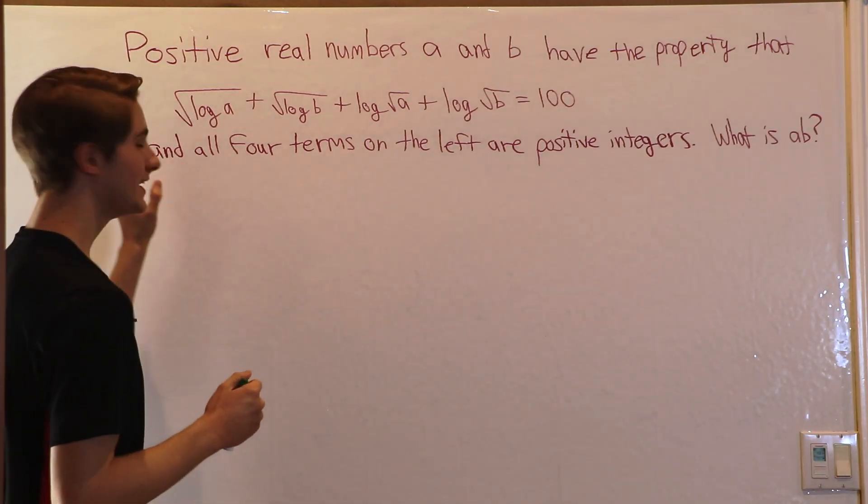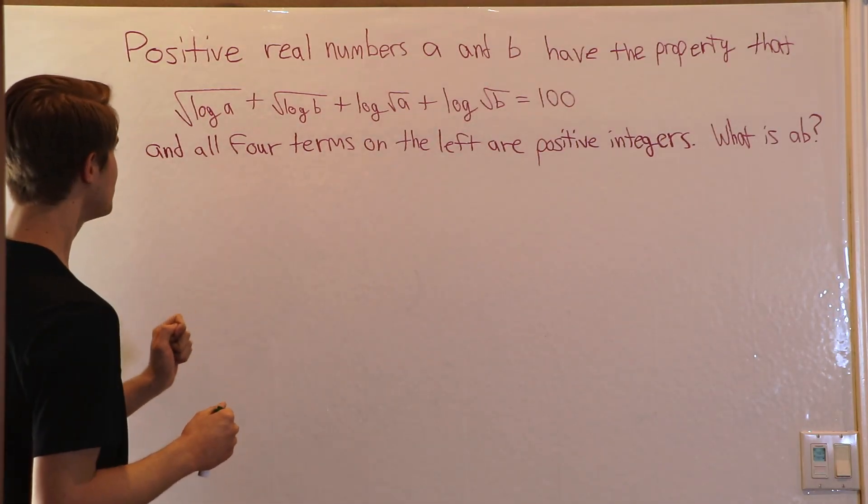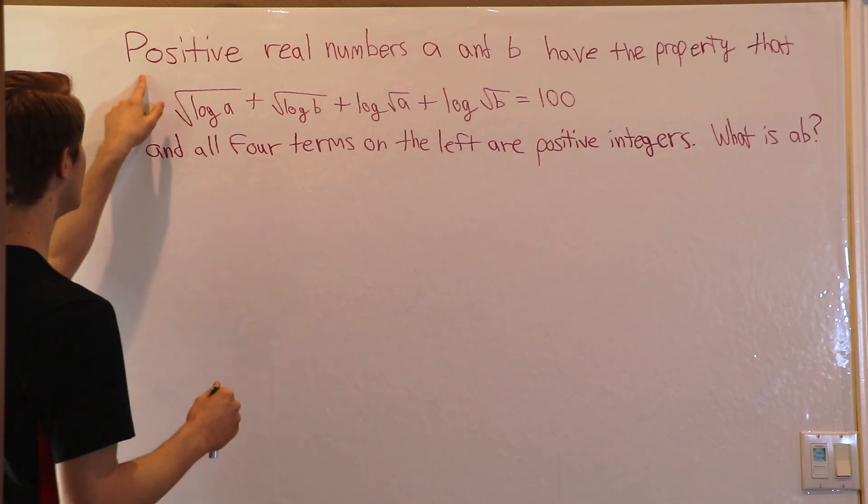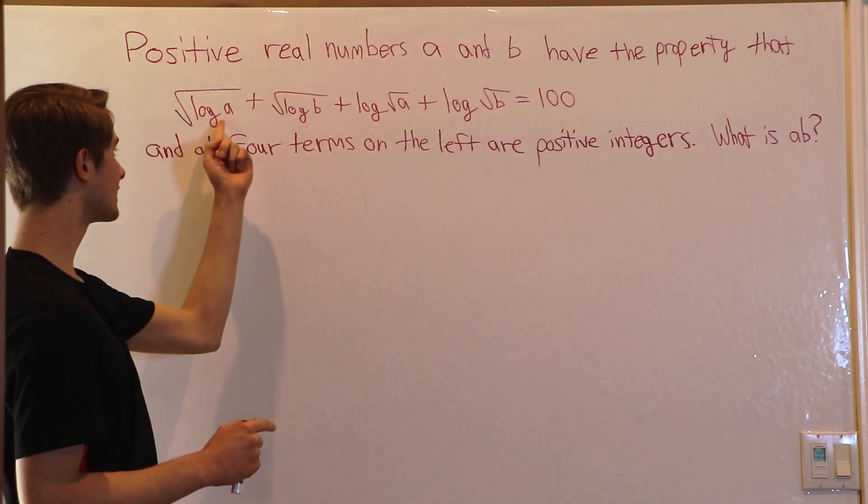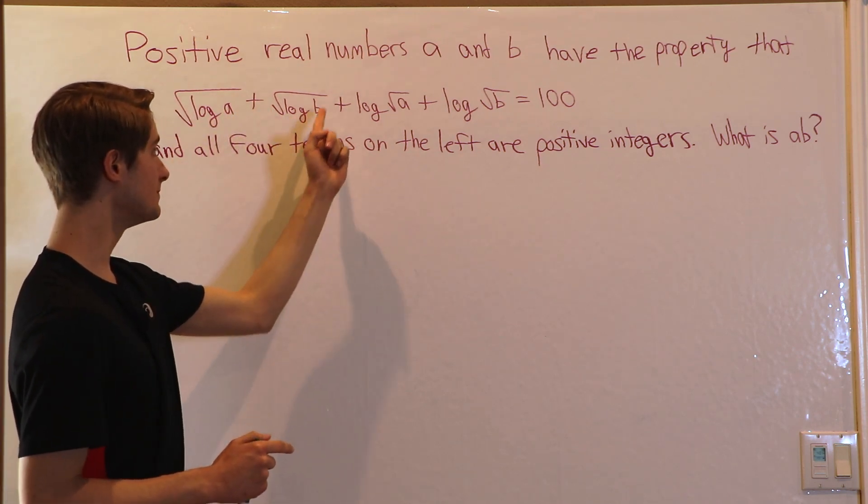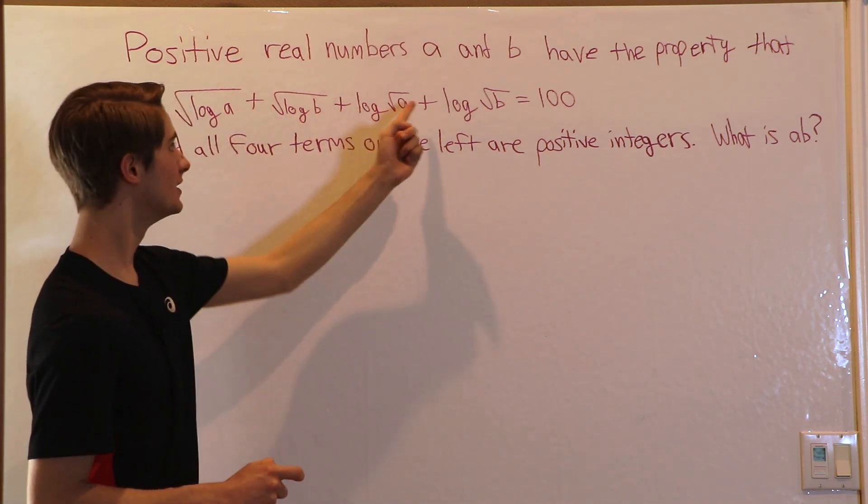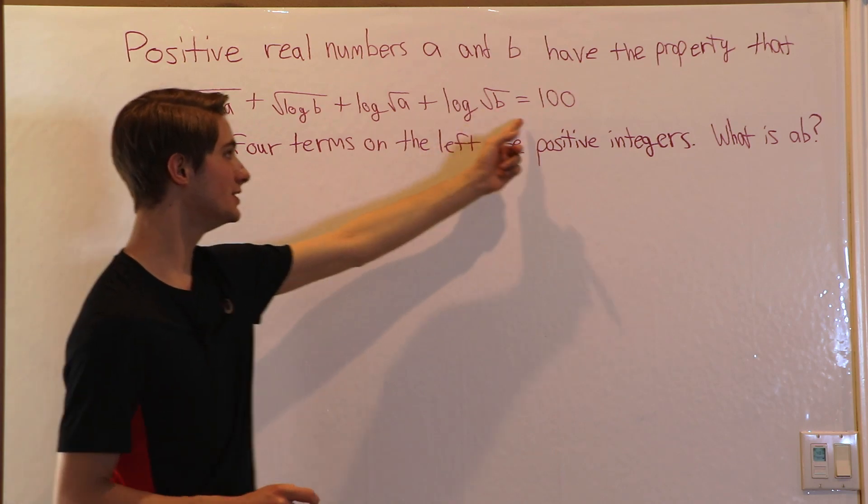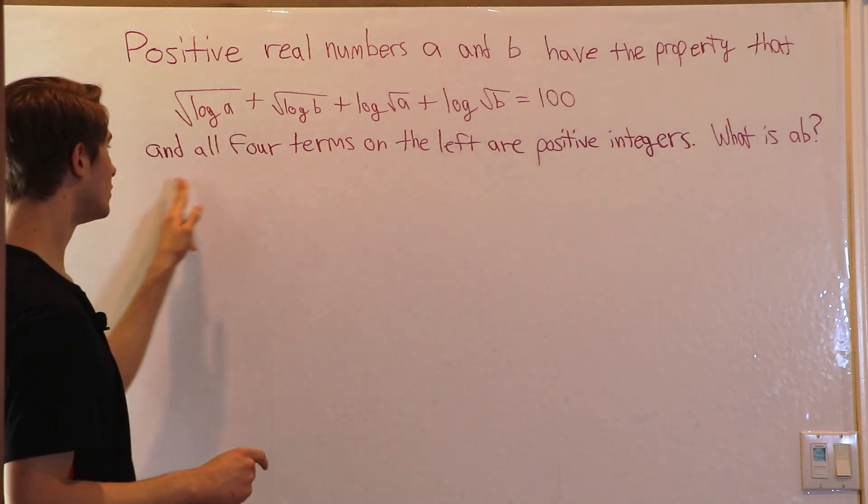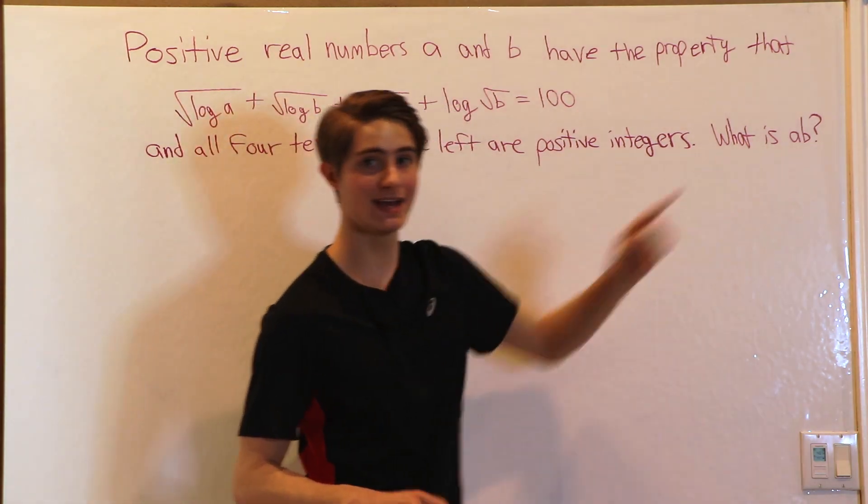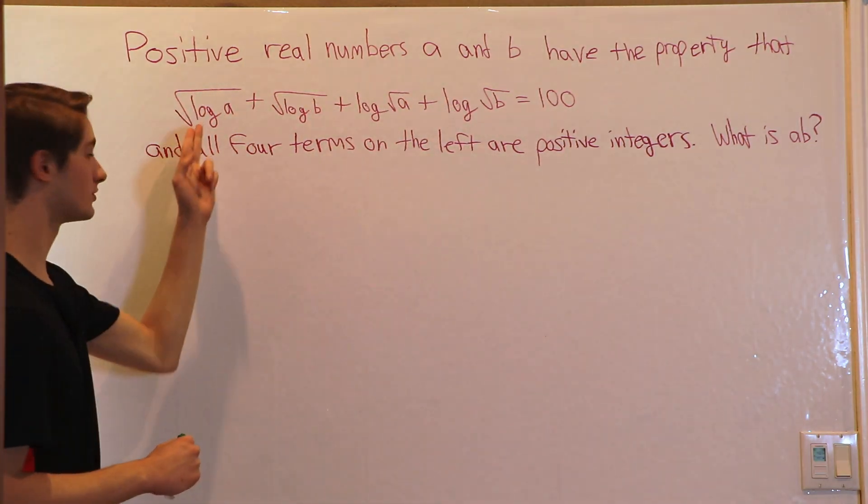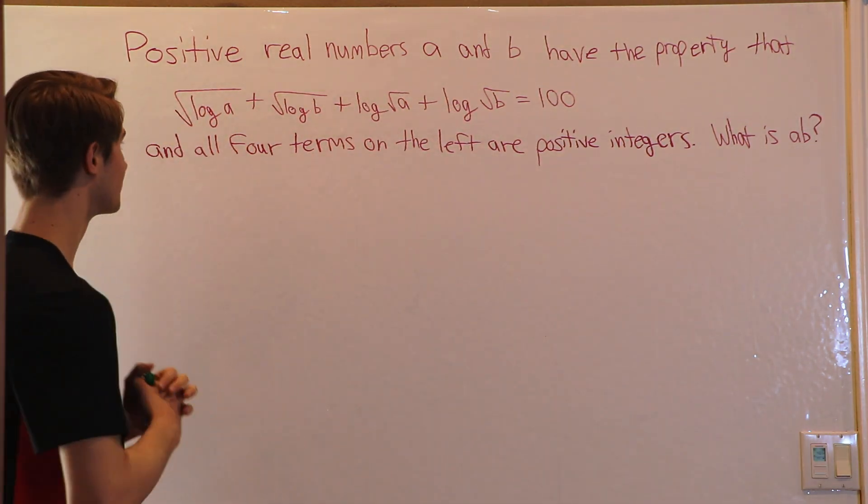So we are going to do the 2019 AMC 12A problem 15. Positive real numbers A and B have the property that square root log A plus square root log B plus log square root A plus log square root B equals 100, and all four terms on the left are positive integers. What is AB? In this case, log is denoting the base 10 logarithm.